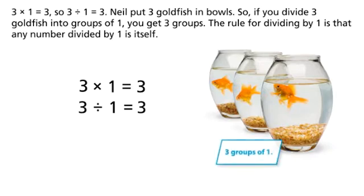So if you divide three goldfish into groups of one, you get three groups. The rule for dividing by one is that any number divided by one is itself.